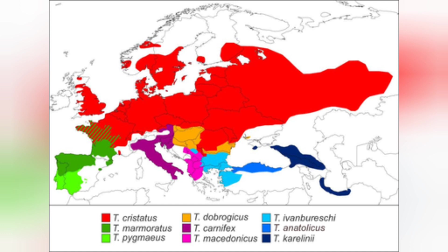Thank you to anyone who has stuck with me through this video — I know it's a bit more technical than our normal content, but hopefully it has given you a bit of an insight into the distribution of Triturus species and also the importance of recording locality when breeding newt species in captivity. If any viewers are Latin scholars or taxonomists and want to point out that I've pronounced any binomial names incorrectly, you're more than welcome to do so — it's not my expert area, and neither is geography, so if I've made any errors please point them out in the comments. Thank you again for watching and I'll see you in the next video!